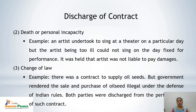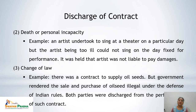Third cause of impossibility is change of law. If there is any change of law between the date of contract and the date of performance, both parties will be discharged. For example, there was a contract to supply oil seeds but the government rendered the sale and purchase of oil seeds illegal under the Defence of India Rules, so both parties were discharged from performance, as the change of law was not in the control of either party.